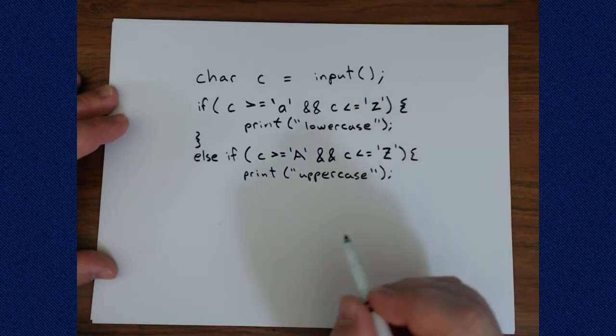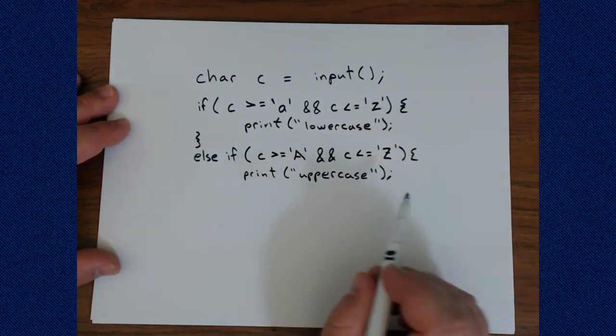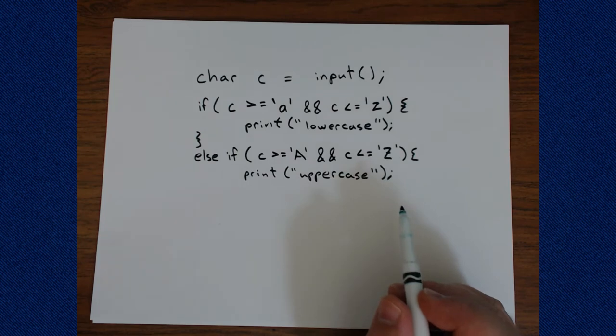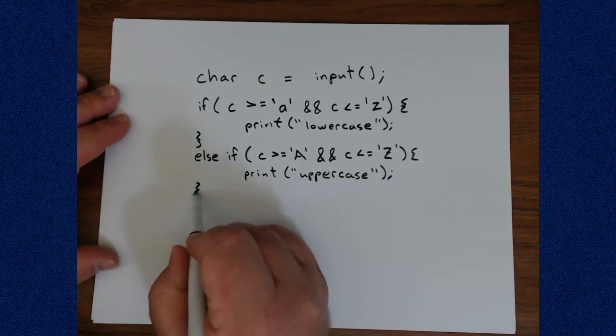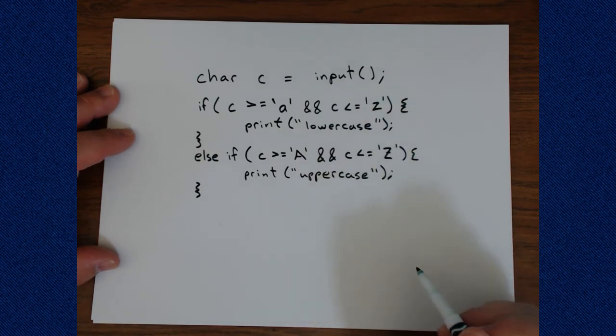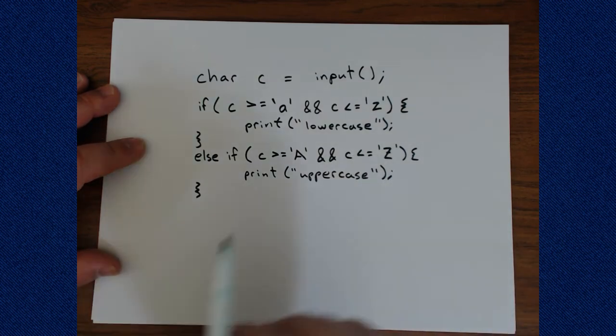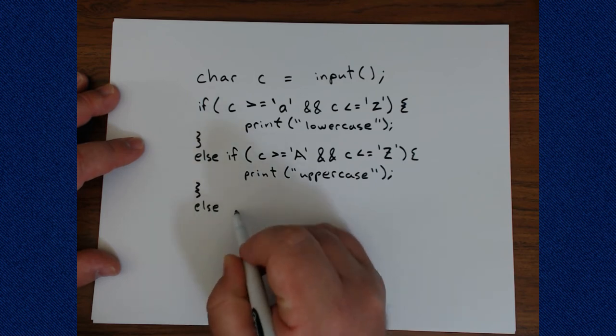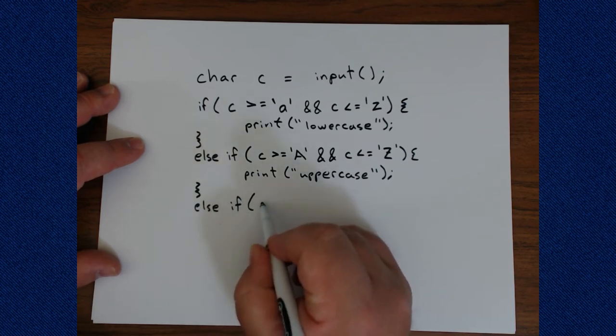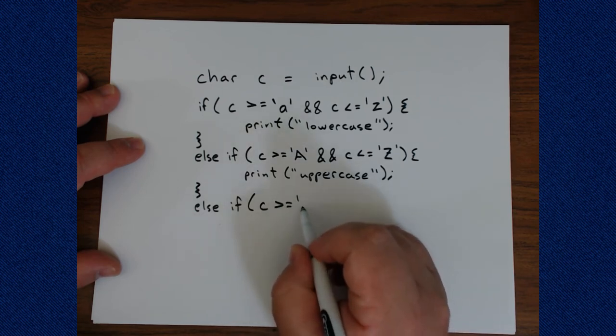But the important part here is that none of this code required that I actually look into that ASCII table or whatever table of characters that I may be working with. I can just use the relationship between the characters. Now it could also be a number. I better check that.